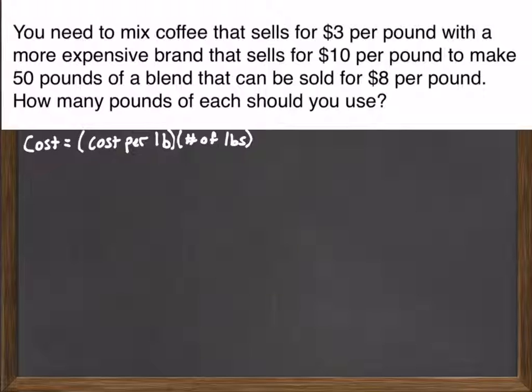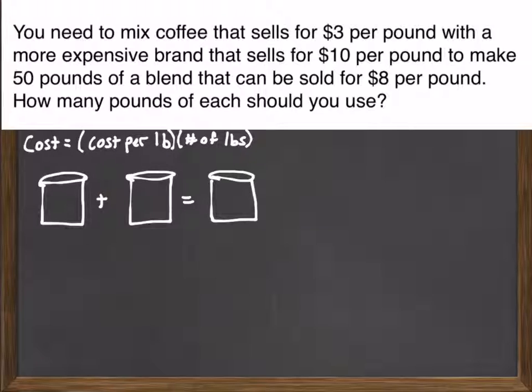Okay, so in a standard mixture problem, which this is one, we have a diagram of really two containers of stuff being dumped into a third container. And again, very important, those fixed quantities, the things that don't change in the problem, and that is the cost per pound. So we can label each container. We put that fixed quantity in the middle there.